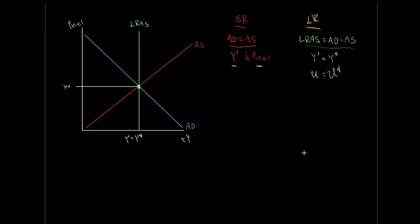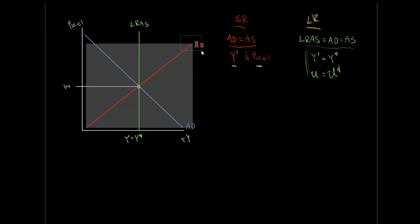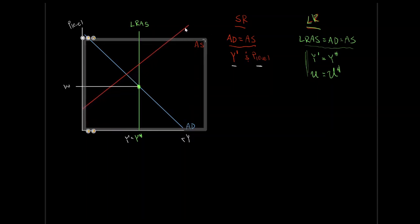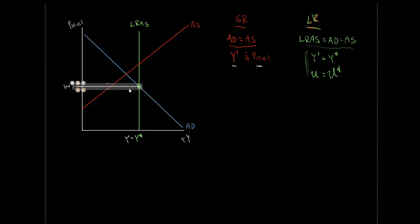In the long run we would always expect output to equal potential GDP, and our actual unemployment rate to equal the natural rate. In the short run, however, this doesn't have to be true. We can have shocks to aggregate demand or aggregate supply such that output is above or below potential, giving us inflationary or recessionary output gaps with corresponding impacts on unemployment. Let's look at our negative aggregate supply shock from the forest fire example and overlay our potential GDP on it.